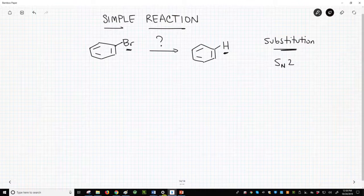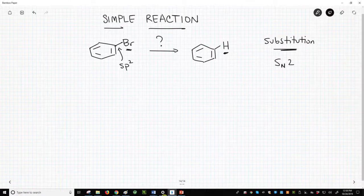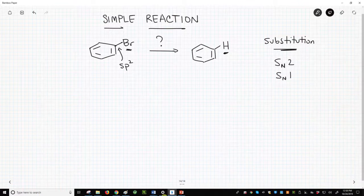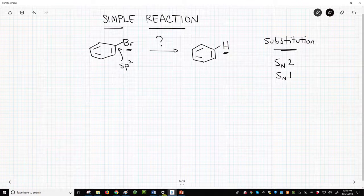We've seen the SN1 reaction, which involves forming a carbocation by loss of a leaving group from an sp3 hybridized carbon. Again,